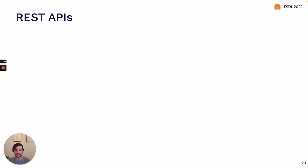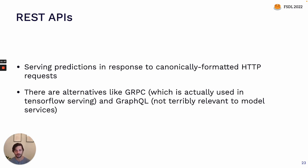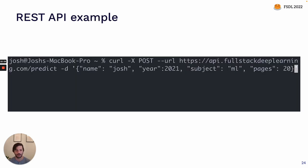Let's talk about REST APIs. REST APIs serve predictions in response to canonically formatted HTTP requests. There are other alternative protocols — probably the most common one you'll see in ML is gRPC, which is used in a lot of Google products like TensorFlow Serving. GraphQL is another commonly used protocol in web development but not terribly relevant for building model services. When you are sending data to a web URL formatted as JSON, oftentimes this is a REST request. In this example, we are sending data to a URL using the POST method and sending a JSON blob representing the inputs to the model we want a prediction from.